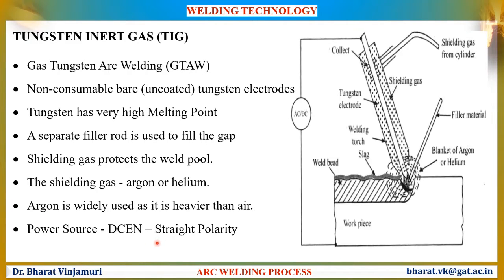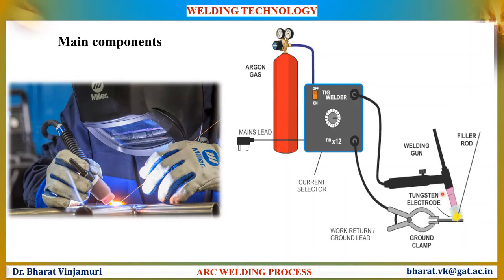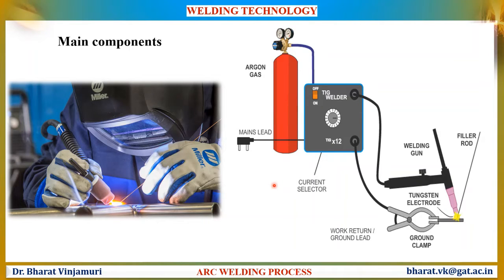It means that the electrode will be connected to the negative terminal and the workpiece will be connected to the positive terminal. Since the electrode is connected to the negative terminal, there will be more amount of current flowing into the workpiece. The major components are the weld torch, the filler rod, the power source, and the gas cylinder which supplies the inert gas to the weld zone.